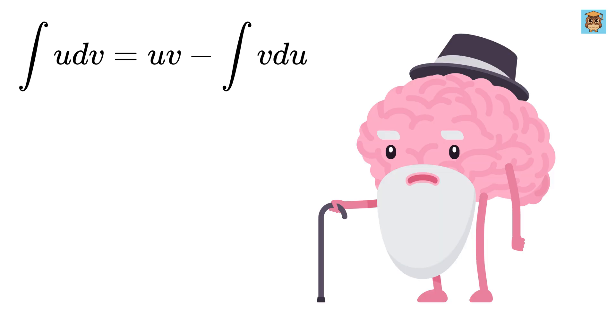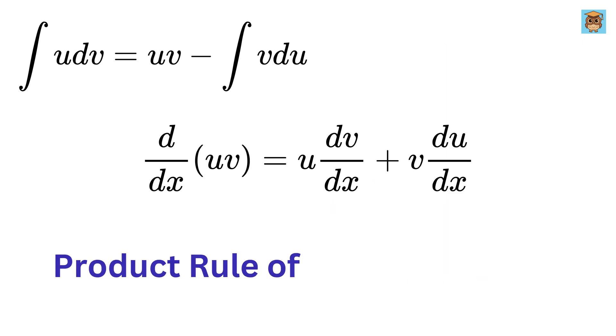If you find it difficult to remember the formula for integration by parts, you can use the product rule of differentiation instead, which is essentially the reverse of the integration by parts, making it much easier to recall.